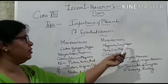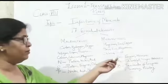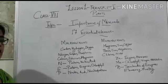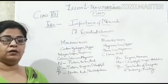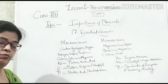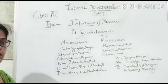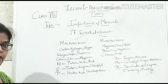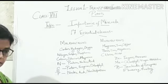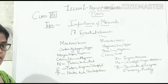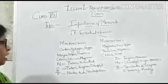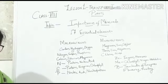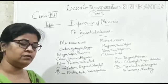Micronutrients are manganese, iron, copper, boron, zinc, molybdenum, chlorine, and nickel. All these essential elements are needed by plants to form their cell organelles, to form nucleic acids which are an important part of their constitution, to form chlorophyll, the pigment needed for photosynthesis, and to synthesize many enzymes and hormones needed by plants for their various activities.